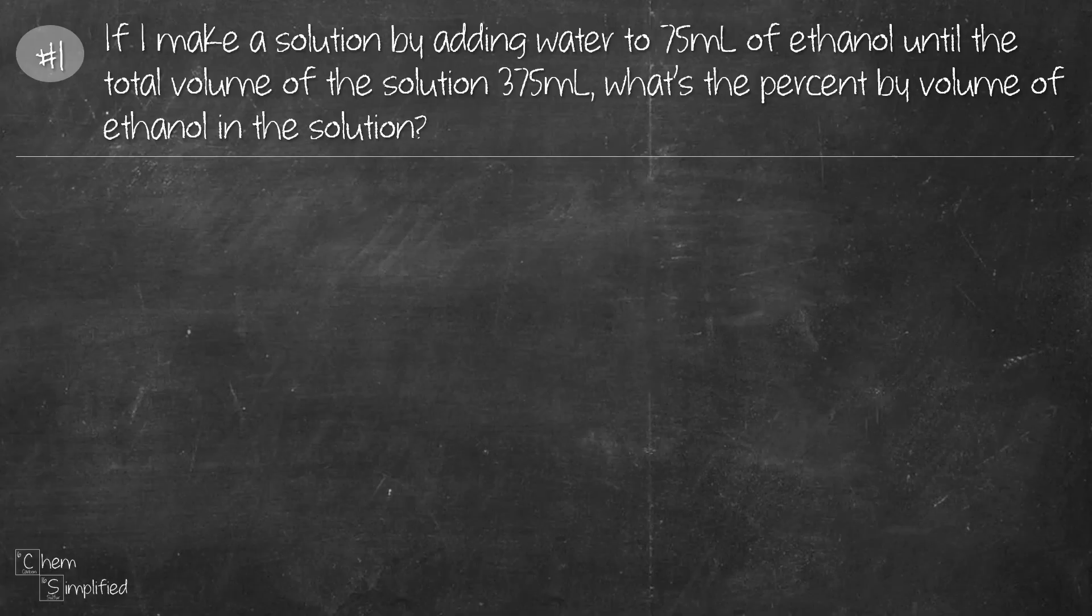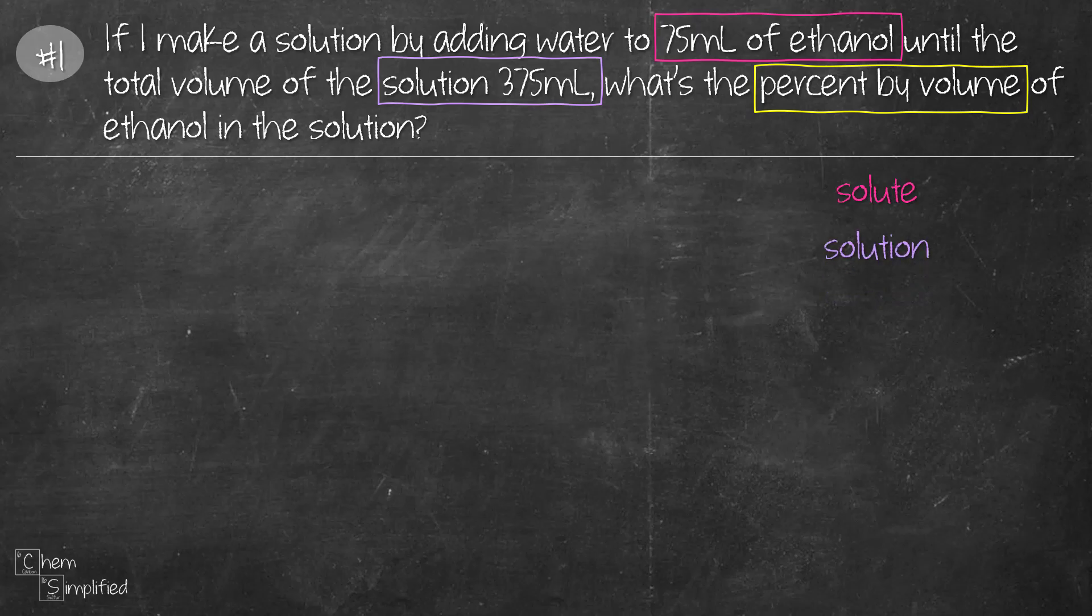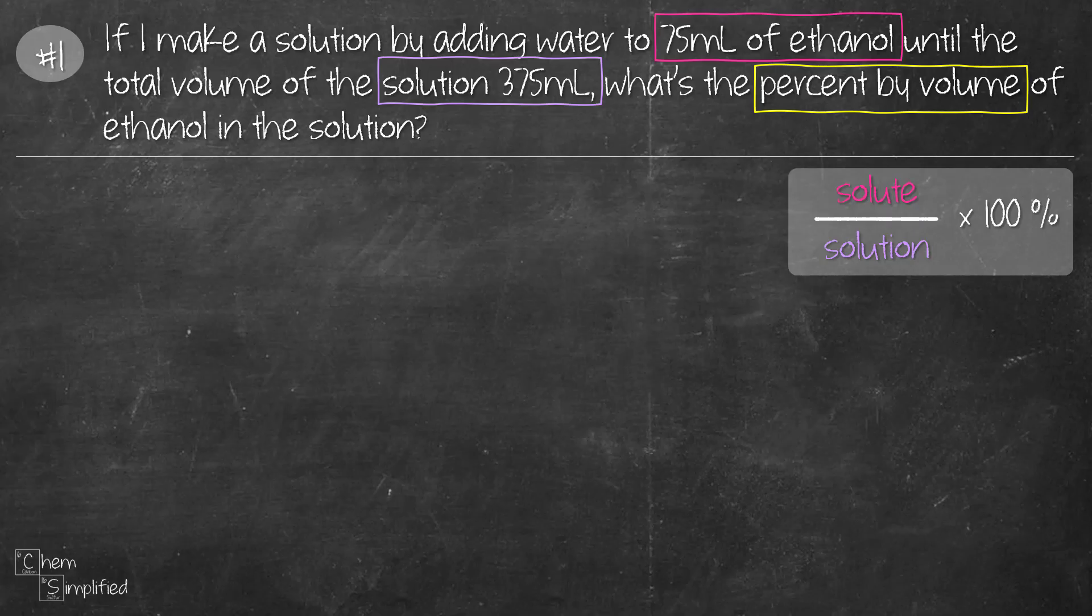When you read this question, you'll notice that we're given 75 ml of ethanol and 375 ml solution and we're asked to find the percent by volume. When it comes to solving percent concentration, we need to identify what's the solute and what's the solution. Here's a pro tip. You don't need to memorize the formula for percent concentration. All you need to remember is that solute is always on the top and solution is at the bottom, and then you multiply with 100 percent. The solute is the smaller number and the solution is the larger number.